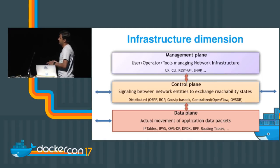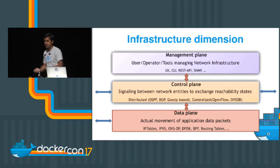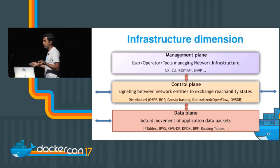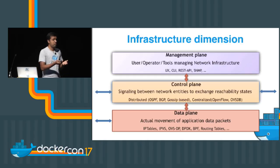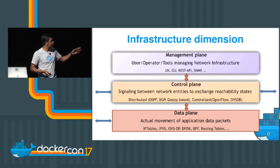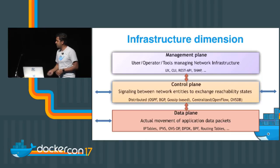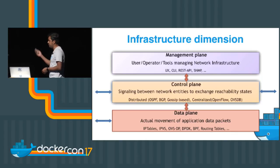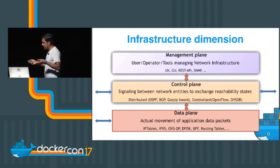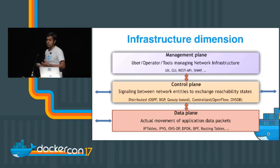Then comes the data plane. The data plane is the actual movement of packets from application to application. Whether an application runs in a VM, bare metal, or containers, when two applications talk to each other, that is the data plane. We use various mechanisms today — from Cisco hardware and other vendor hardware like CIF, to IP tables, IPVS, OVS-DPDK, even Microsoft VFP. All of those come into the data plane — the plane that helps move traffic from A to B.